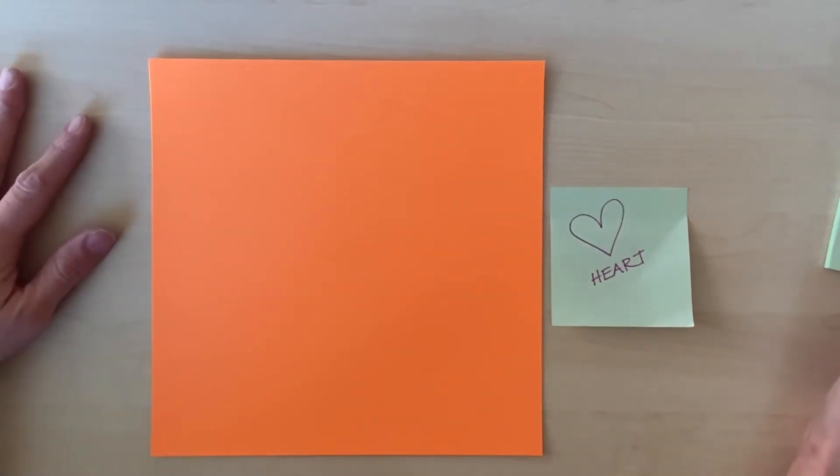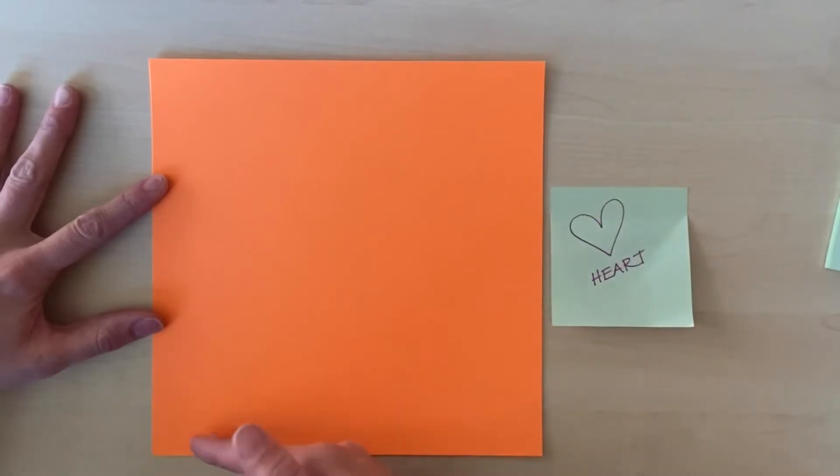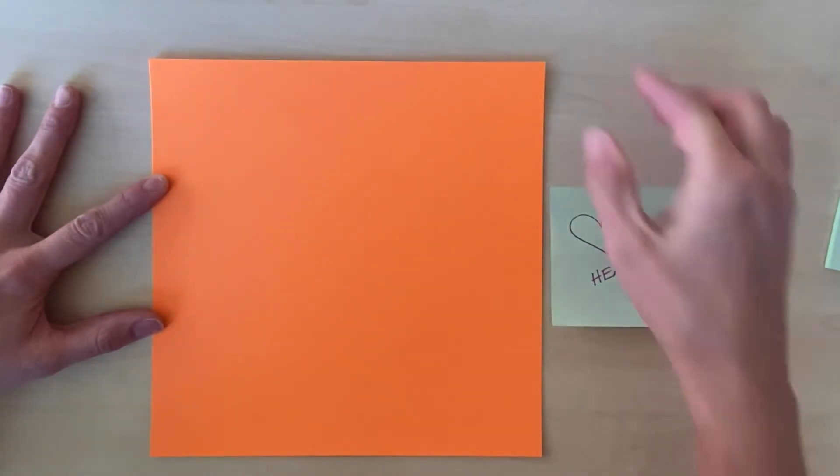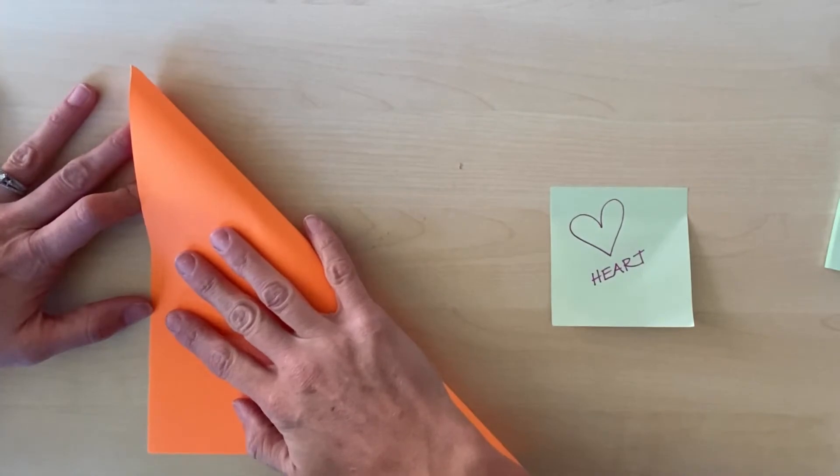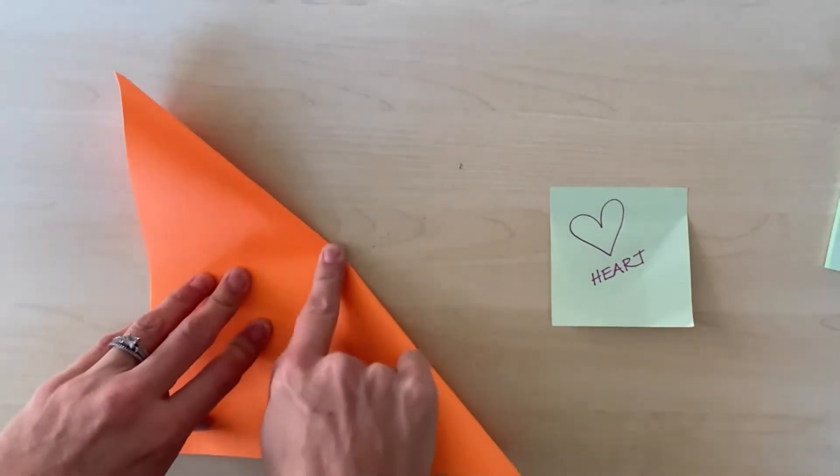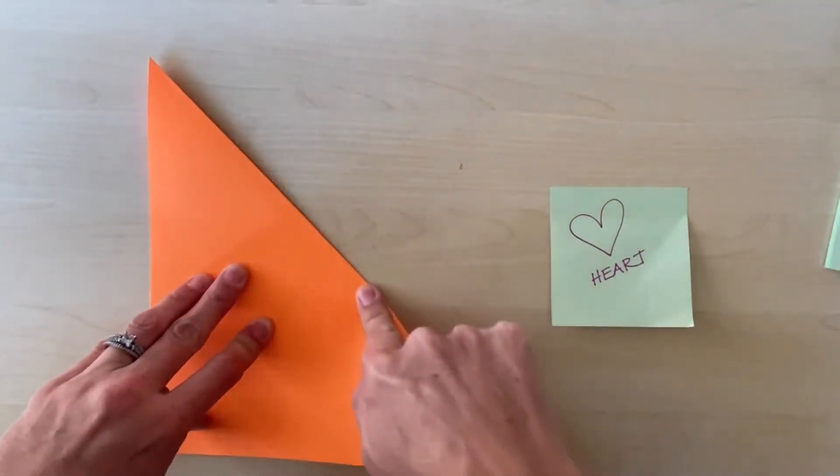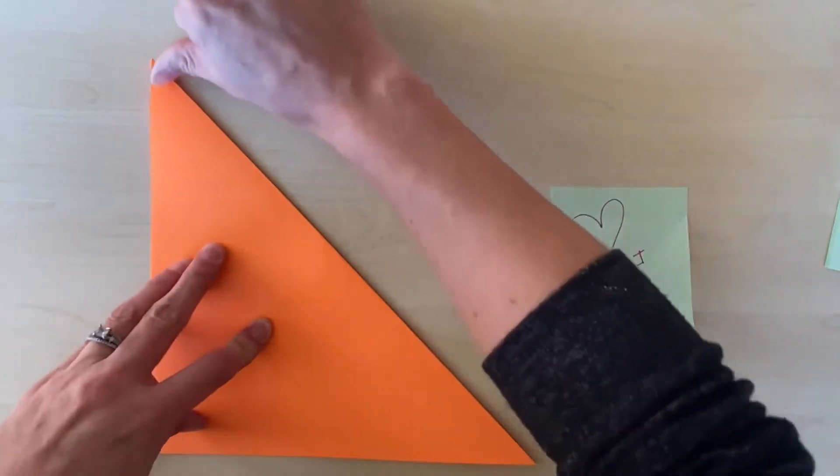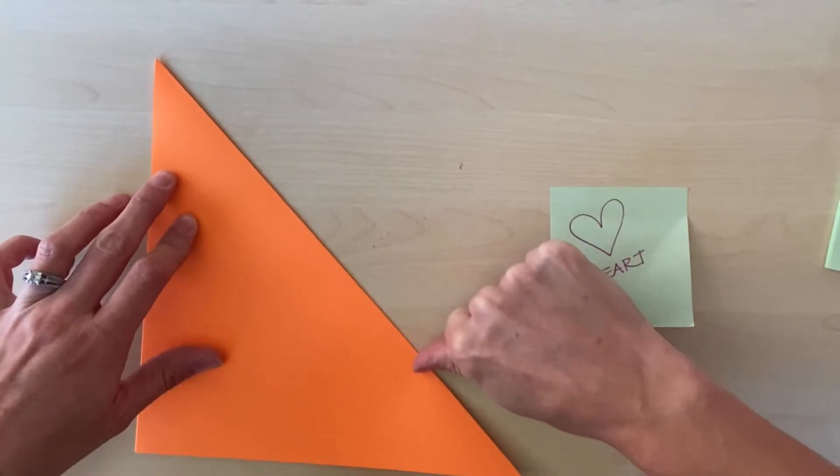The first step is to fold our paper diagonally on both sides to create an X. Make sure you line it up well before you crease. I'm pressing hard and using the back of my fingernail to follow that crease to make sure it's pressed in well.